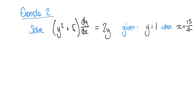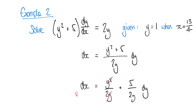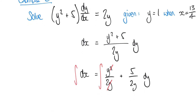Let's look at one more example. We have the expression (y² + 5) times dy/dx equals 2y, and we're told that when y equals 1, x equals 13/4. We rearrange into the form dx equals (y² + 5) over 2y dy. We can break this fraction into separate terms to make integration easier: dx equals (y²/2y + 5/2y) dy, which simplifies the fractions.